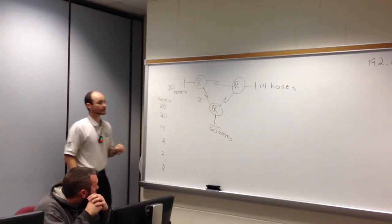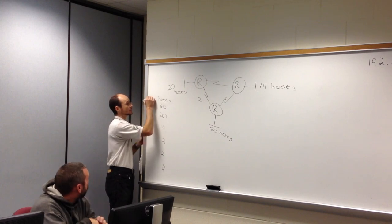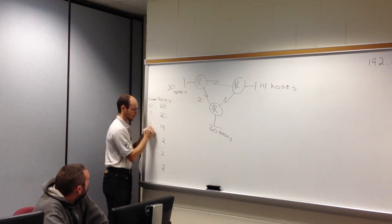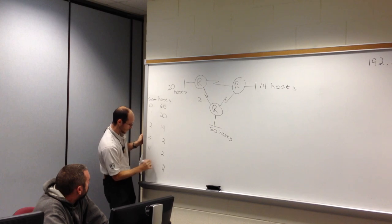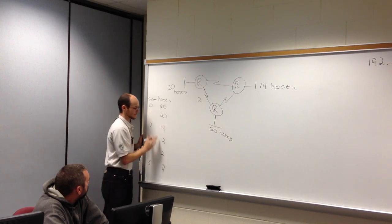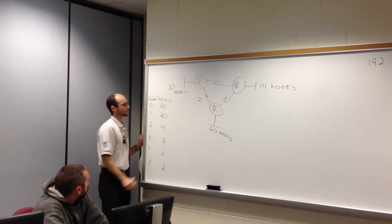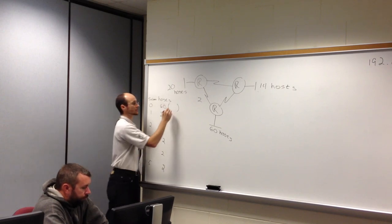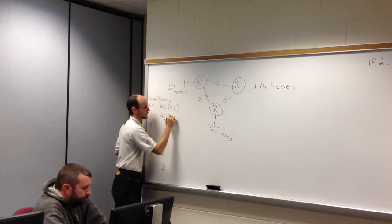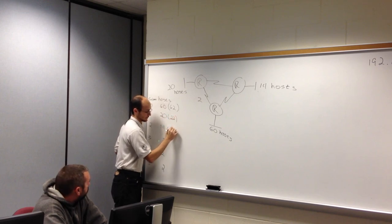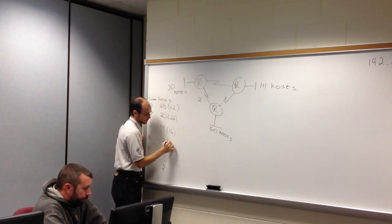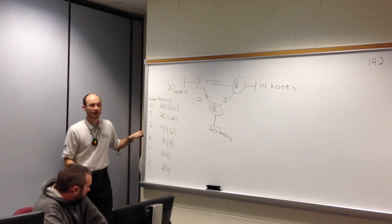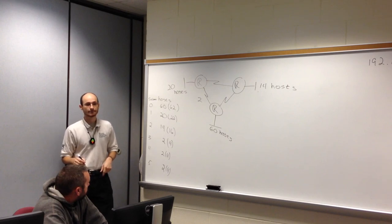I'll call these subnets zero through five. Adding two to each usable count gives total host lengths: 62, 22, 16, and 4 for each WAN. I use two raised to six for subnet zero (64 total, accommodates 62), two raised to five for subnet one (32, accommodates 22), two raised to four for subnet two (16), and two raised to two for subnets three, four, and five (4 each).